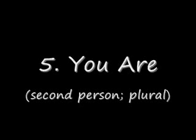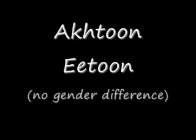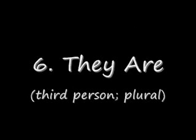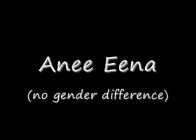Next is 'you are' — the second person again, but this time in the plural. Akhtun itun. Akhtun itun. In the plural, there's no gender difference. This is just when you're talking to more than one person; this means 'you are.' Finally is 'they are' — the third person plural. Ani ina. Again, there's no gender difference. This means 'they are.'